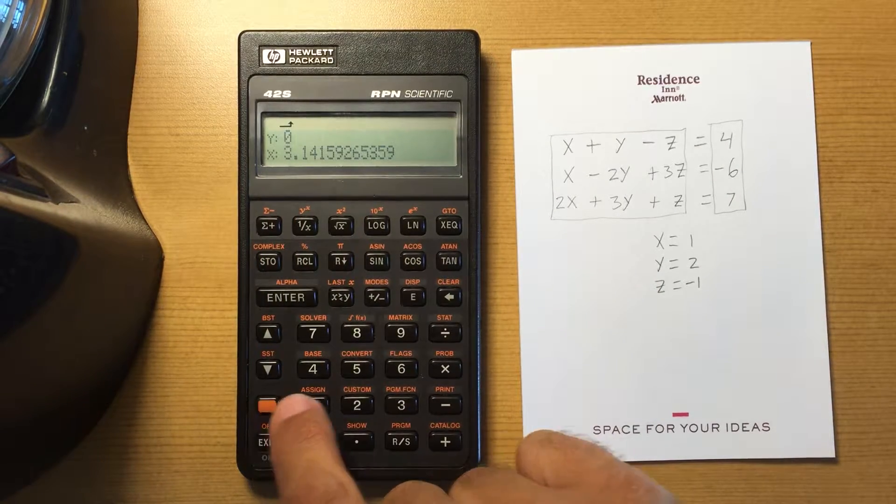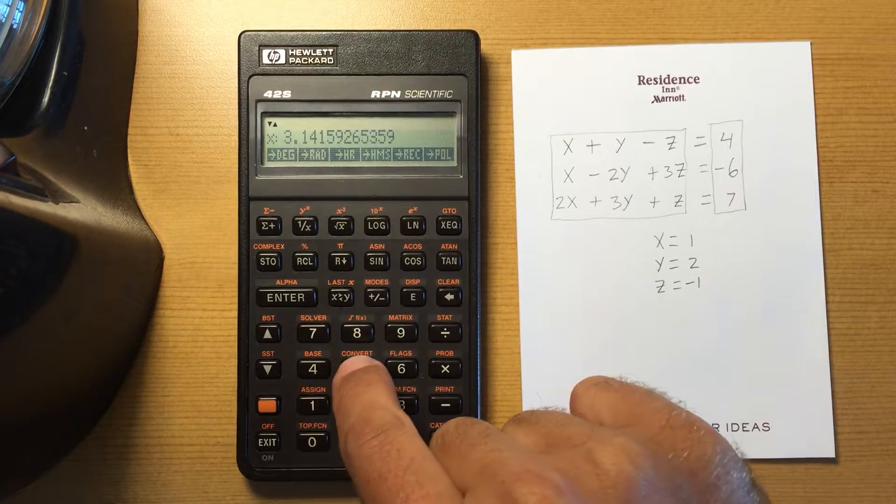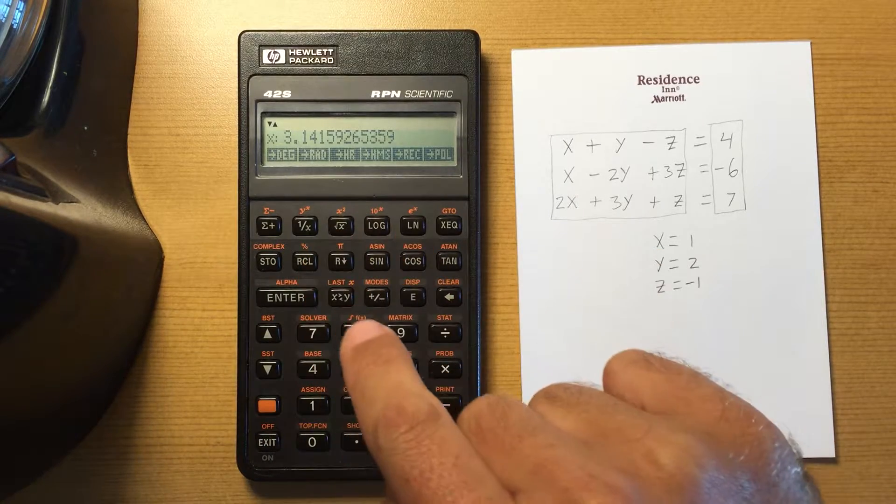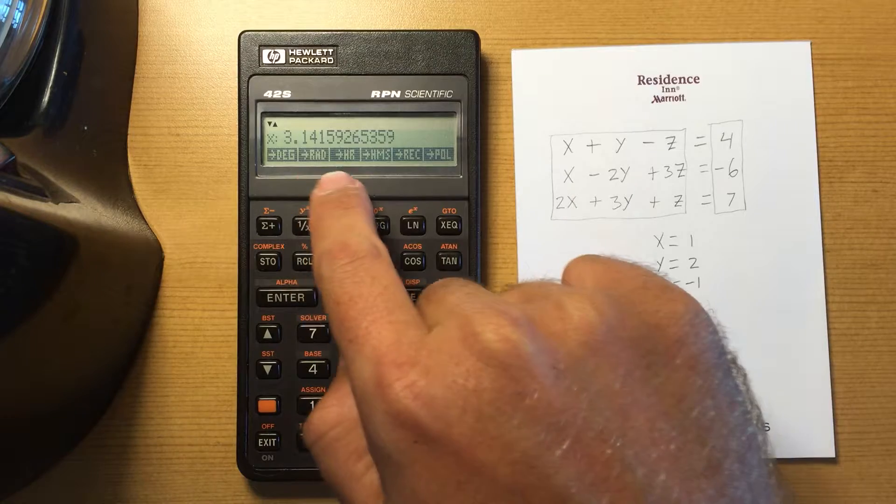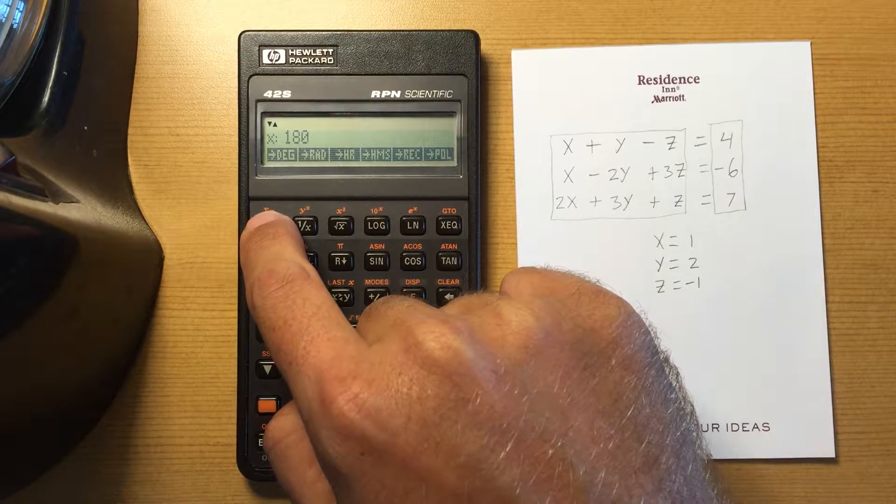Let me just hold the convert menu open here. If I convert pi radians to degrees, that will be 180 degrees.